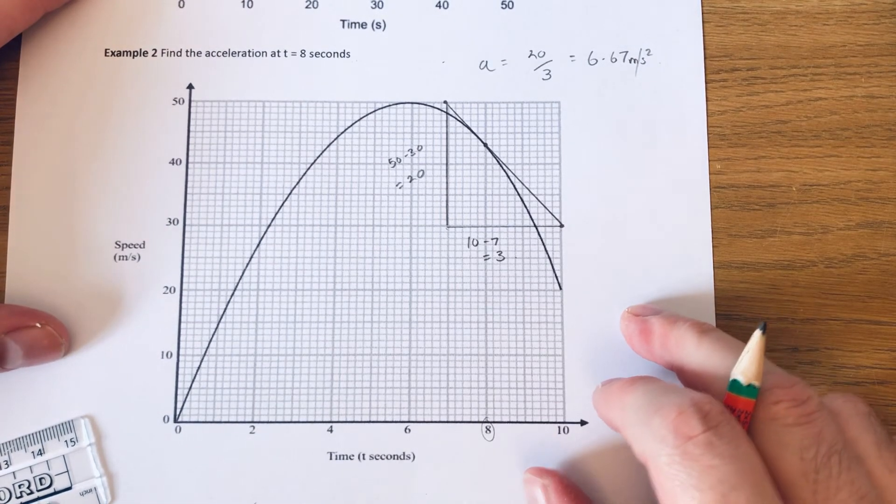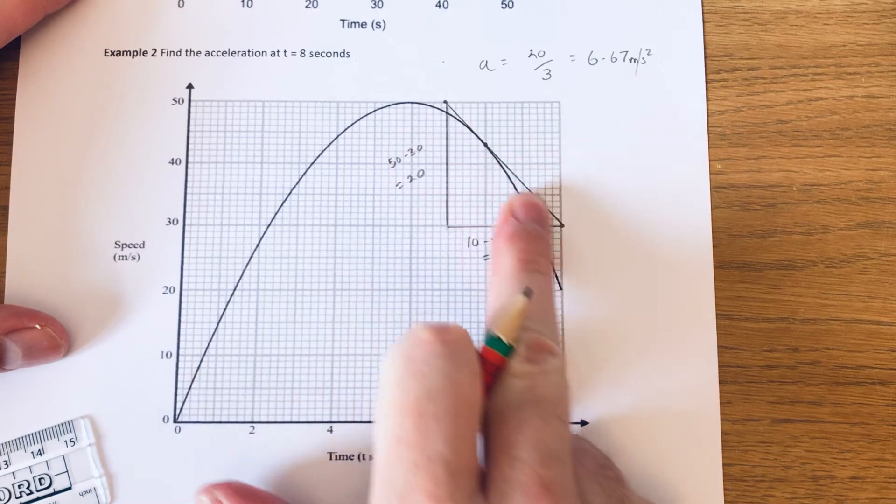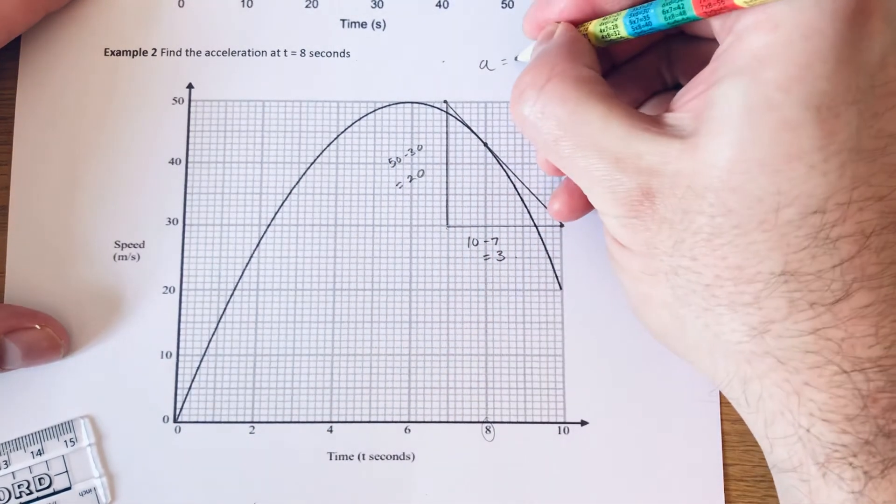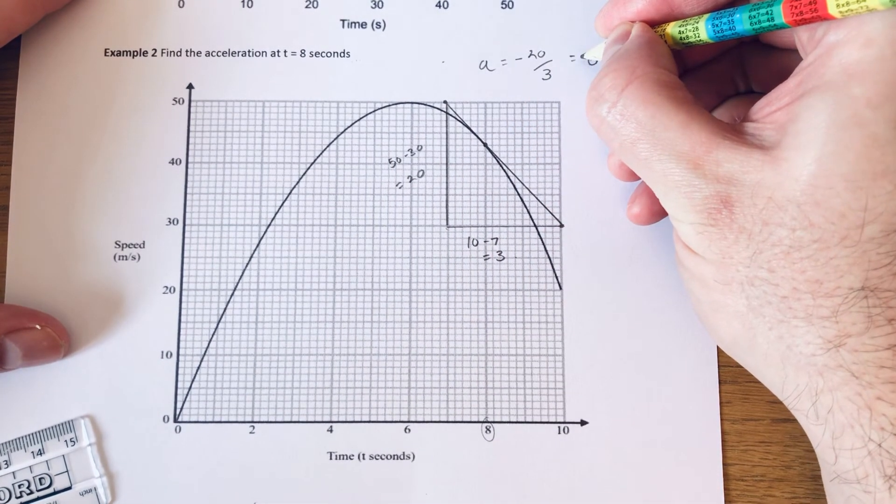And another thing as well on this one. If you notice the line was going downwards across your page. So it's a negative gradient and a negative acceleration.